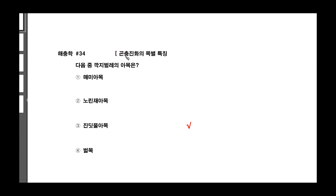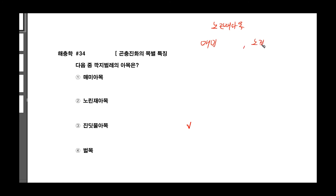추가적인 문제입니다. 권충지나의 목표 특징 34번, 깍지벌레의 암흑은? 하고 물어봤어요. 우리가 노린재 암흑에는 매미 암흑, 그리고 노린재 암흑이 있는데 이를 구분해 보겠습니다.